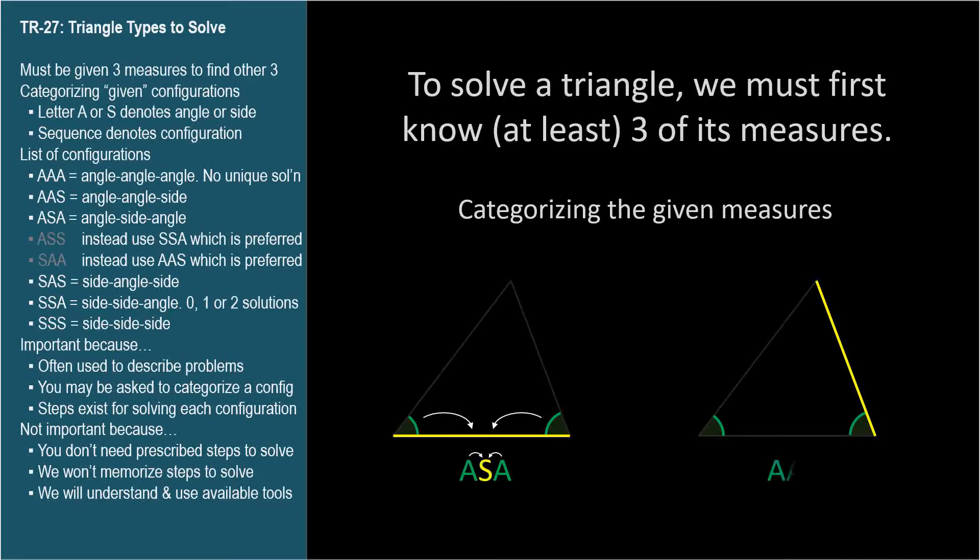The second triangle is AAS. The given side is not the side between the given angles, so the S is not between the A's. It doesn't matter which of the two sides is given, the configuration is simply AAS.